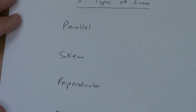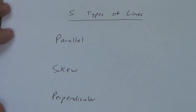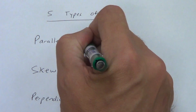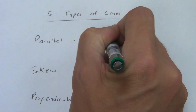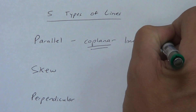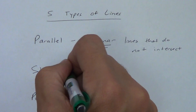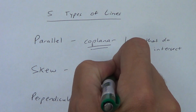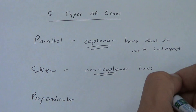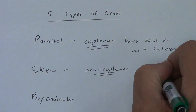Next page — we've got five different types of lines that I want you to know: parallel, skew, perpendicular, and two more we'll get to in a second. Parallel lines are coplanar lines — keep in mind you have to put that word coplanar in there — coplanar lines that do not intersect. Skew lines are non-coplanar lines. They also do not intersect. You can't have non-coplanar lines that do intersect.